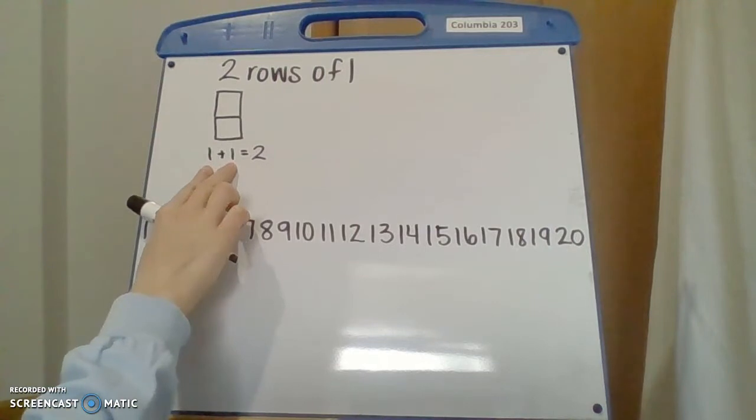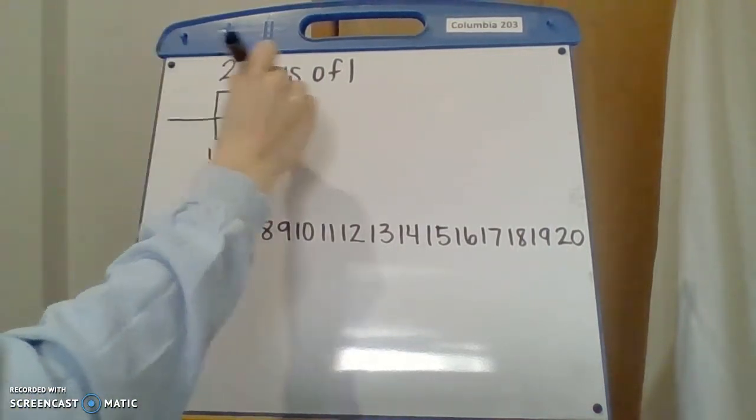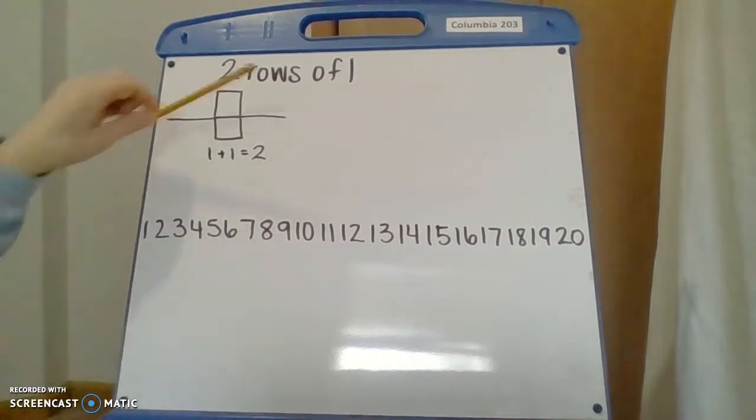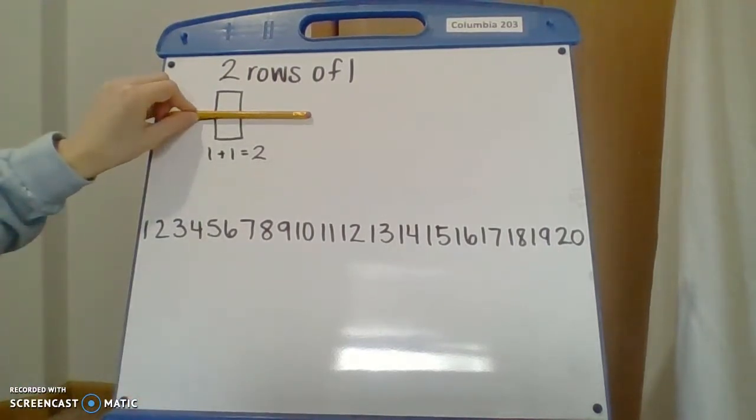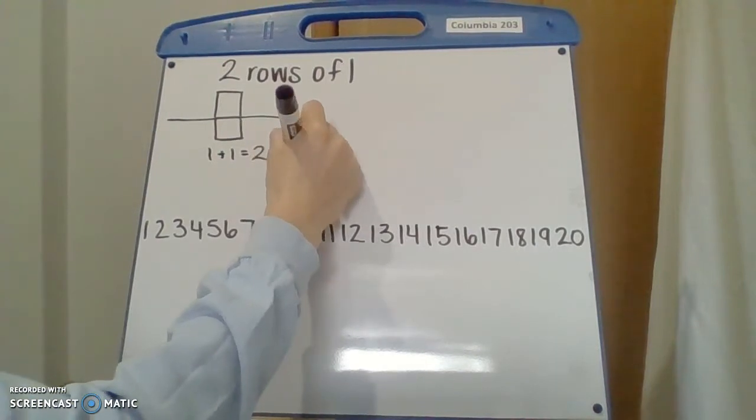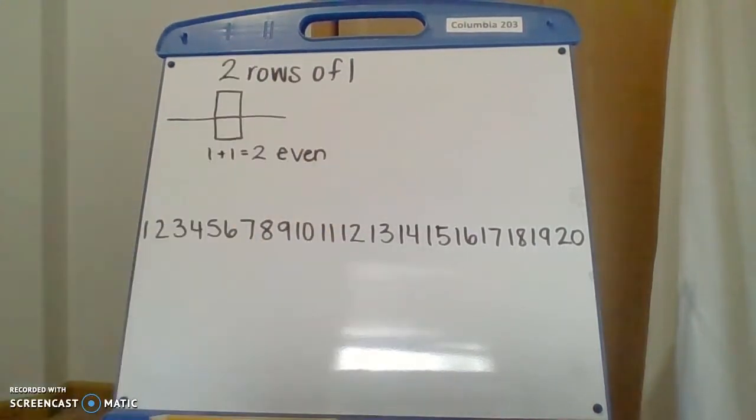I have my two rows. Here's one row. Here's two rows and there's only one in each of them. So now I'm going to write my addition sentence. So I have one plus one, which is going to equal two. And then you're going to ask yourself, remember, we're talking about those even and odd numbers still.